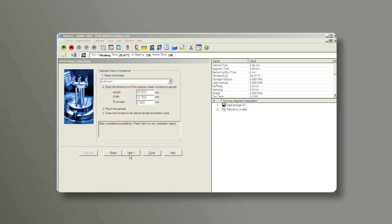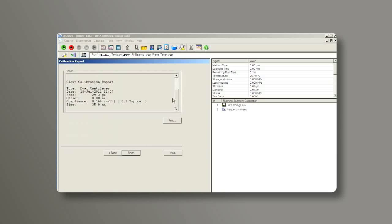After the calibration, click on Next and check the calibration report. Make sure the compliance value is lower than the maximum value which is shown on the right side of the screen. You have now finished the Dual Cantilever Clamp Calibration.